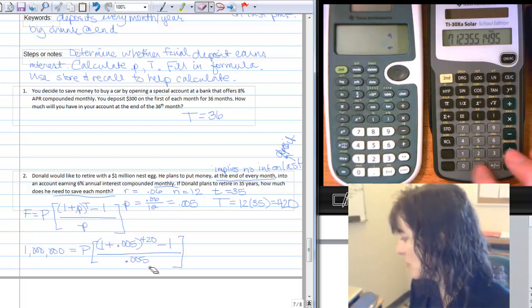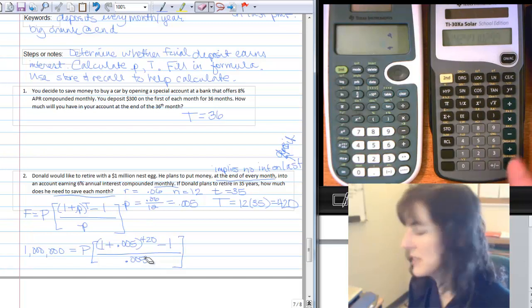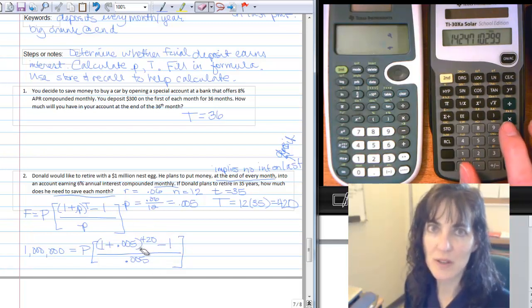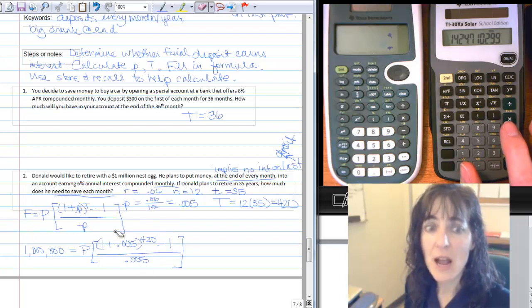Now, divide by the point 0.005, push equals. We push equals a lot because it helps make sure we get the order of operations correct. Now I have a value for this whole thing.